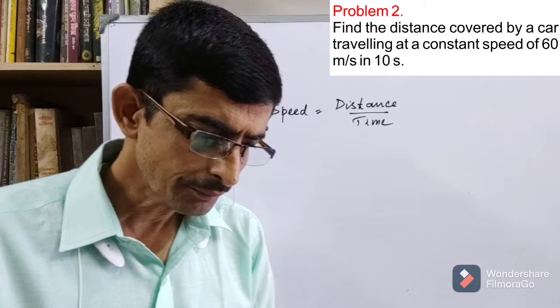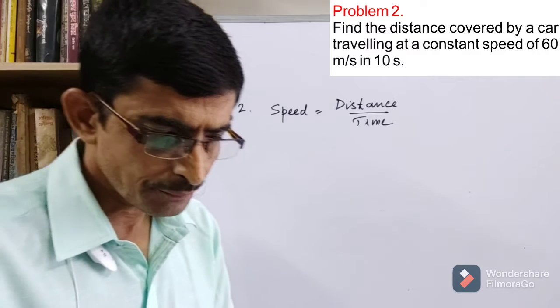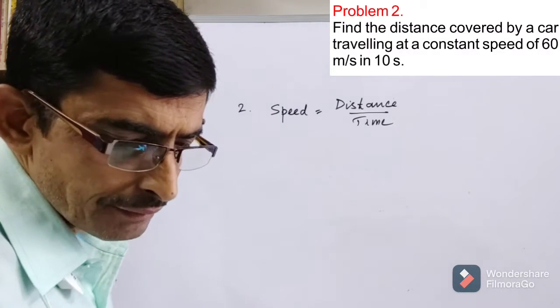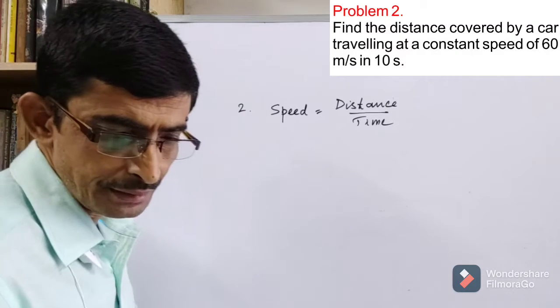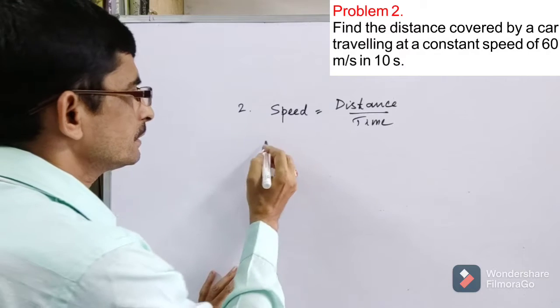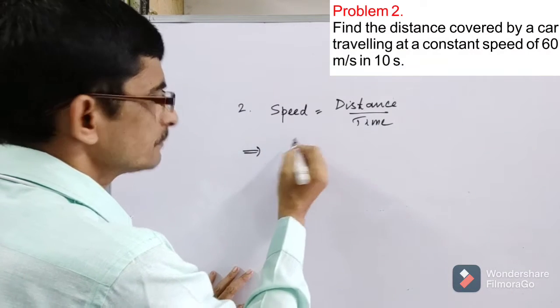Now in the second problem, it is told that we have to find out the distance covered by a car when the car travels with a constant speed 60 meters per second. Time is given: 10 seconds.